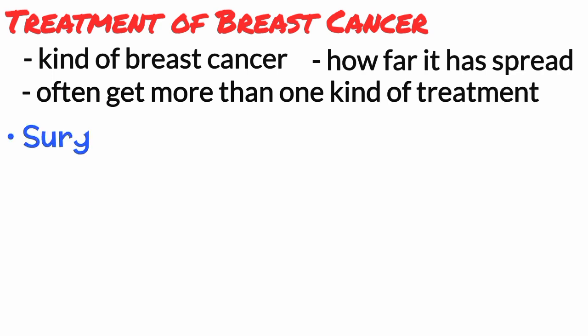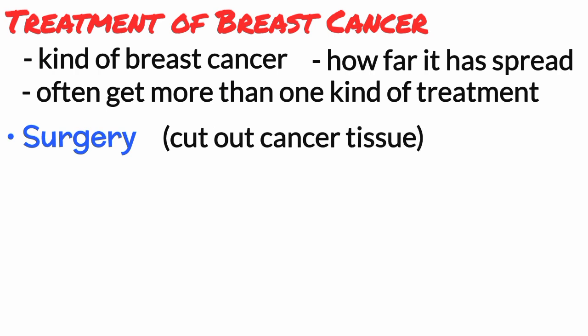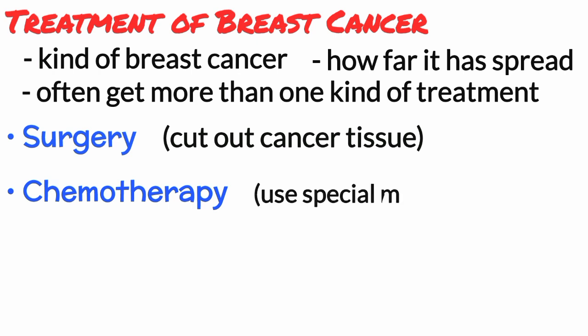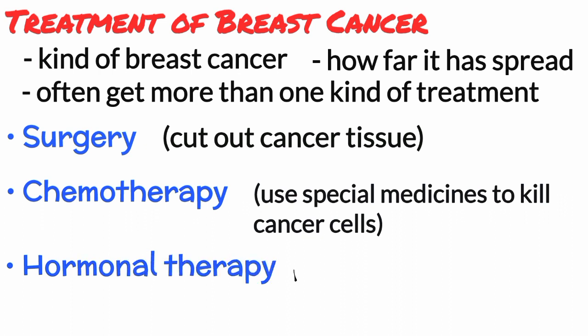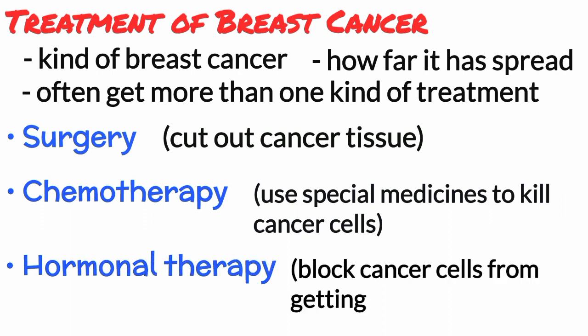Treatment options include: surgery, an operation where doctors cut out cancer tissue; chemotherapy, using special medicines to shrink or kill the cancer cells — the drugs can be pills you take or medicines given in your veins, or sometimes both; and hormonal therapy, which blocks cancer cells from getting the hormones they need to grow.